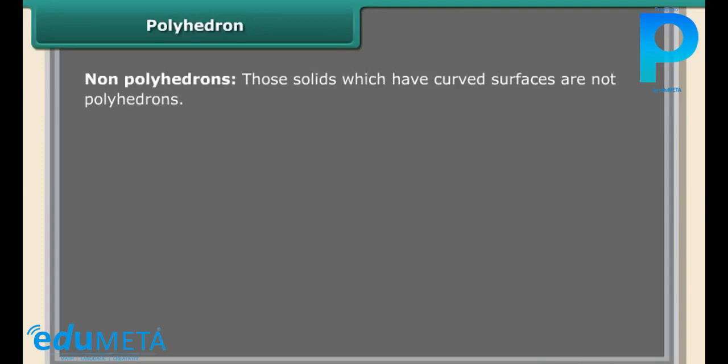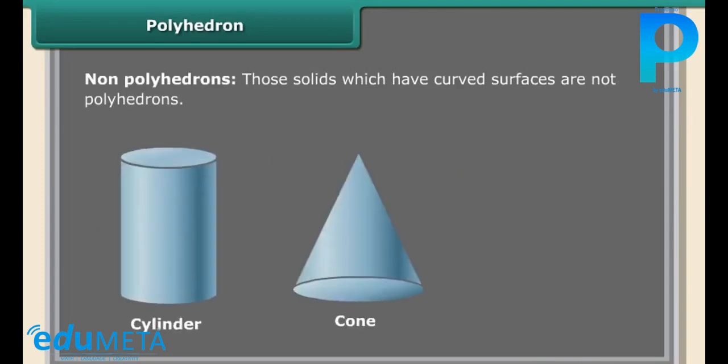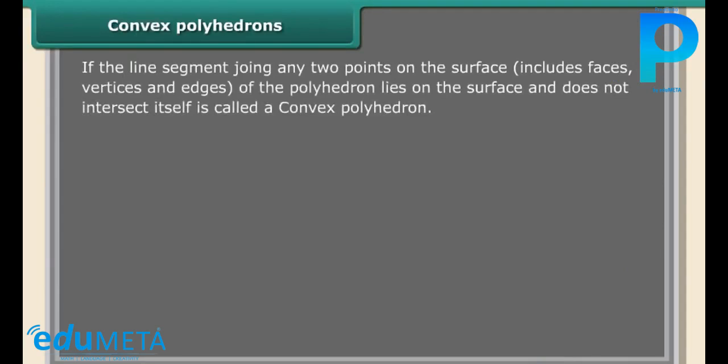Polyhedrons: triangular prism, cuboid, octahedron. Non-polyhedrons: those solids which have curved surfaces are not polyhedrons, such as cylinder, cone, sphere. Convex polyhedrons: if the line segment joining any two points on the surface, including faces, vertices, and edges of the polyhedron,